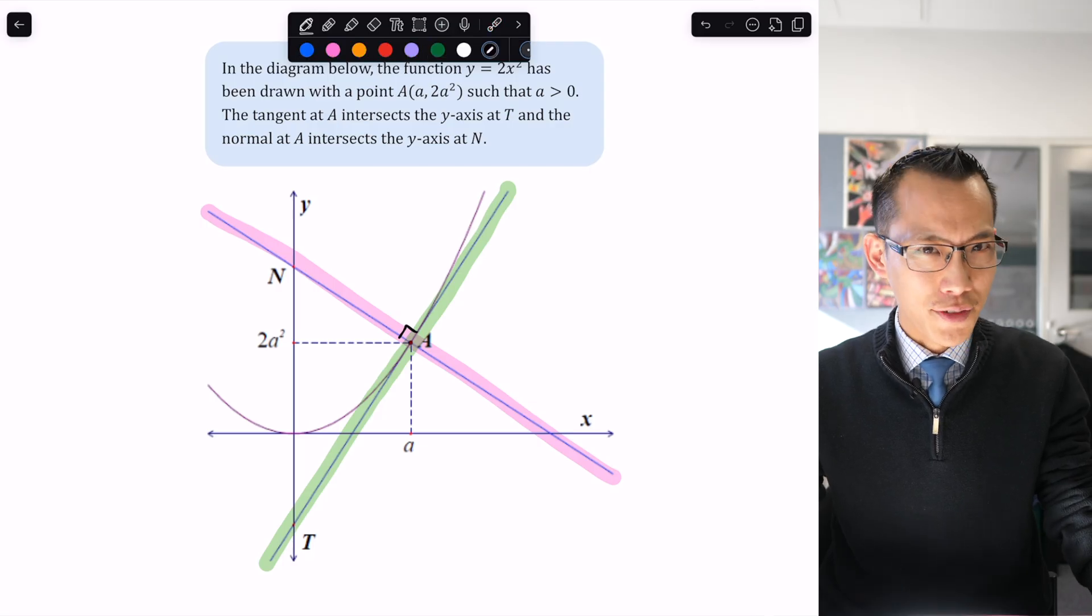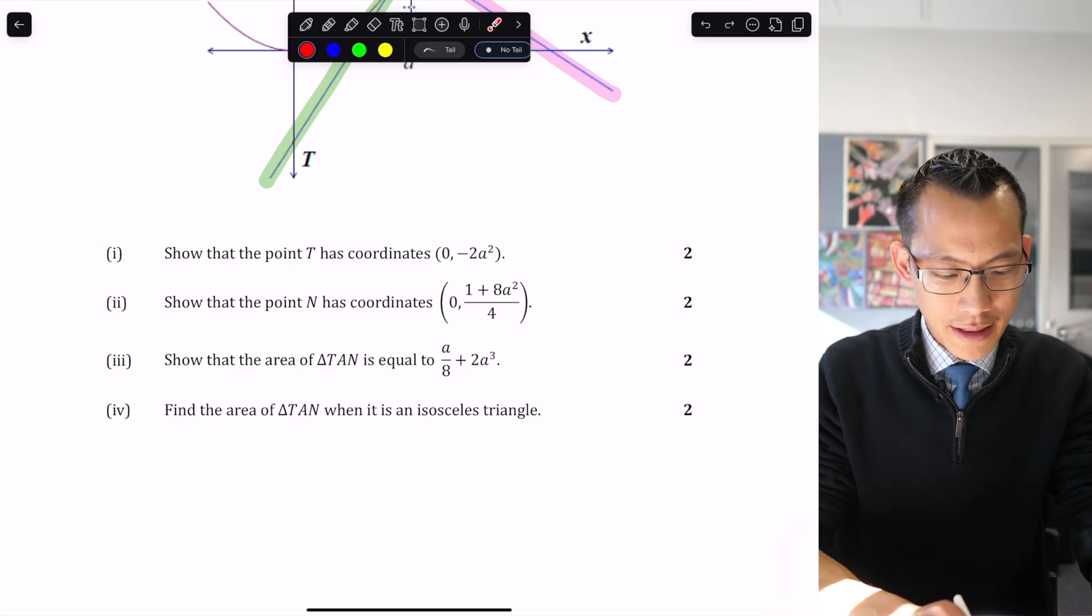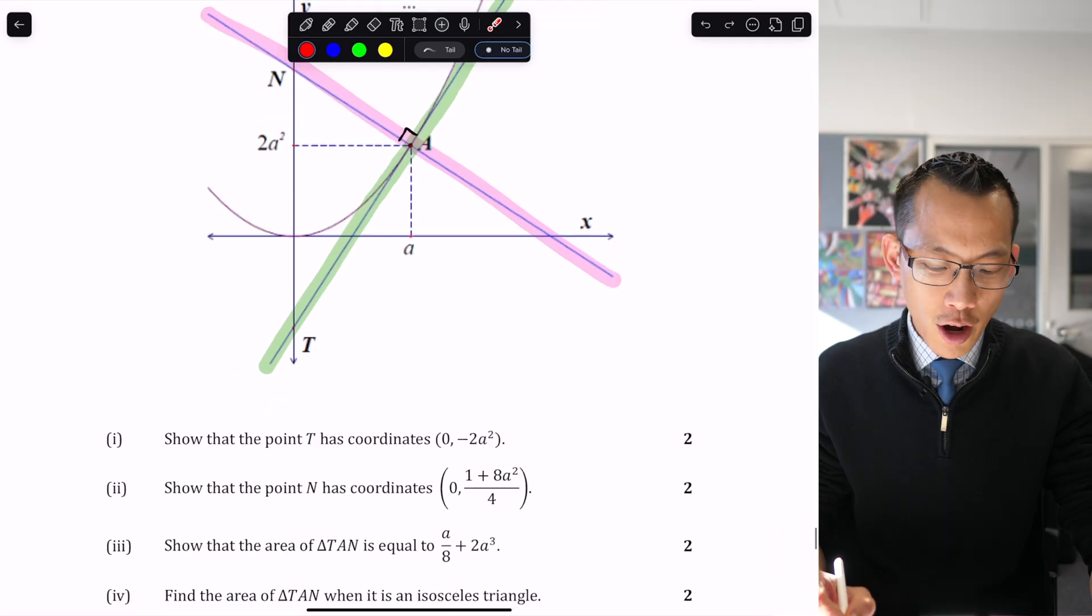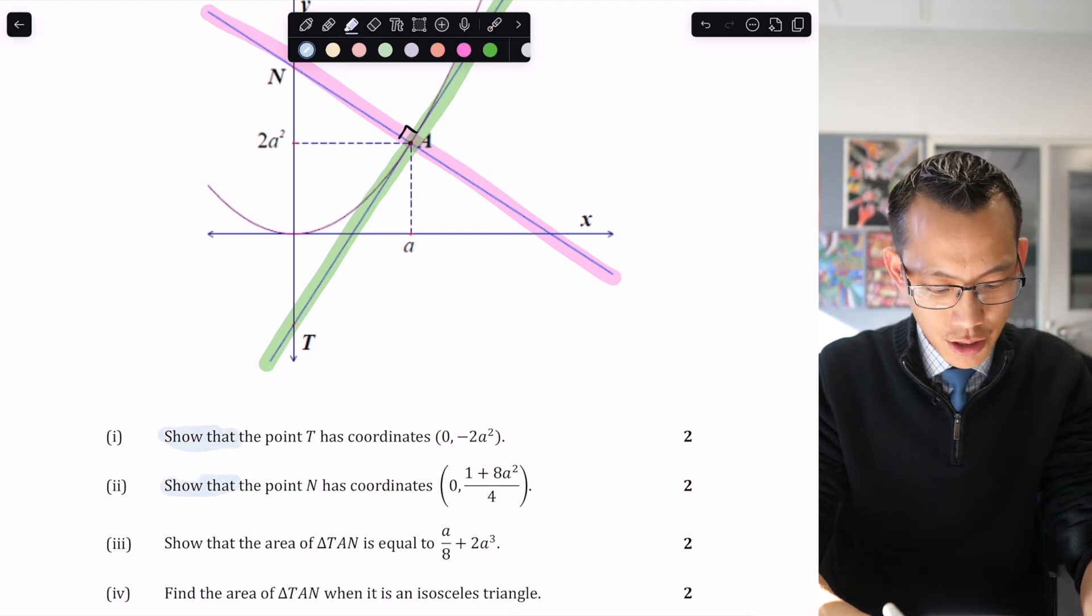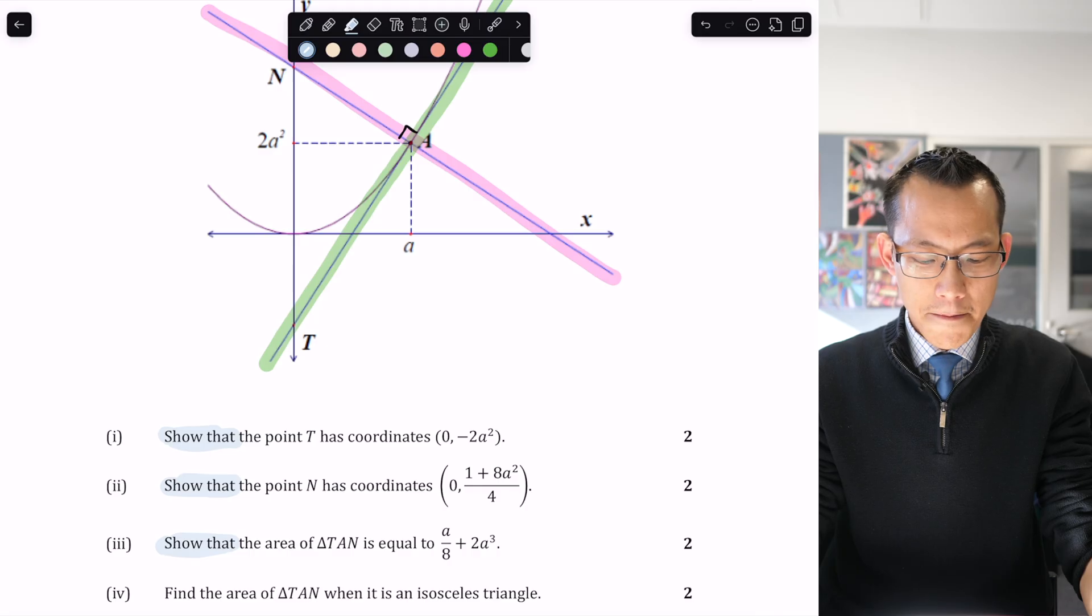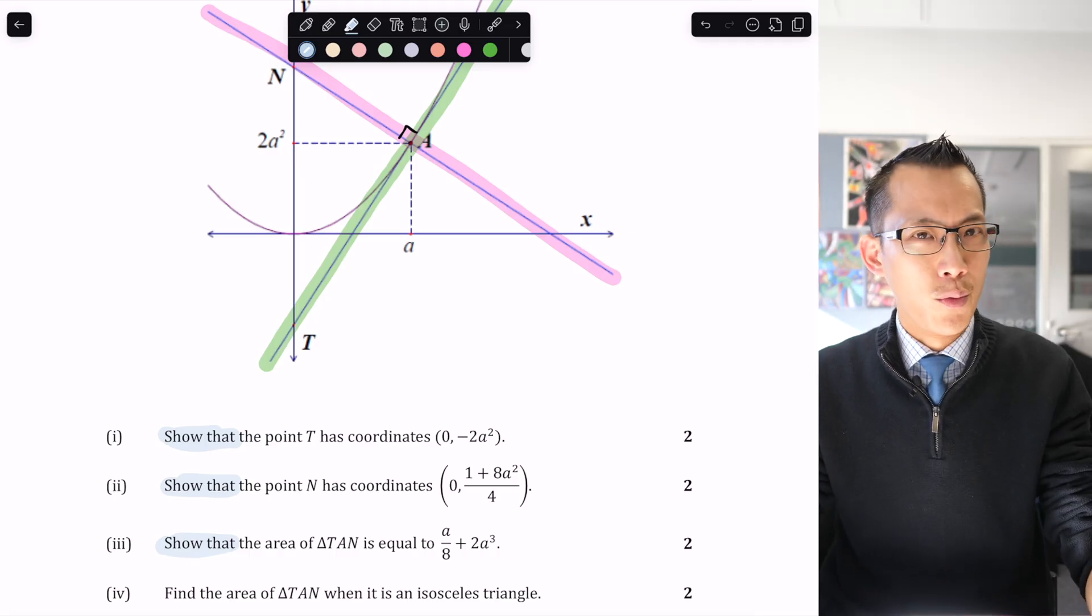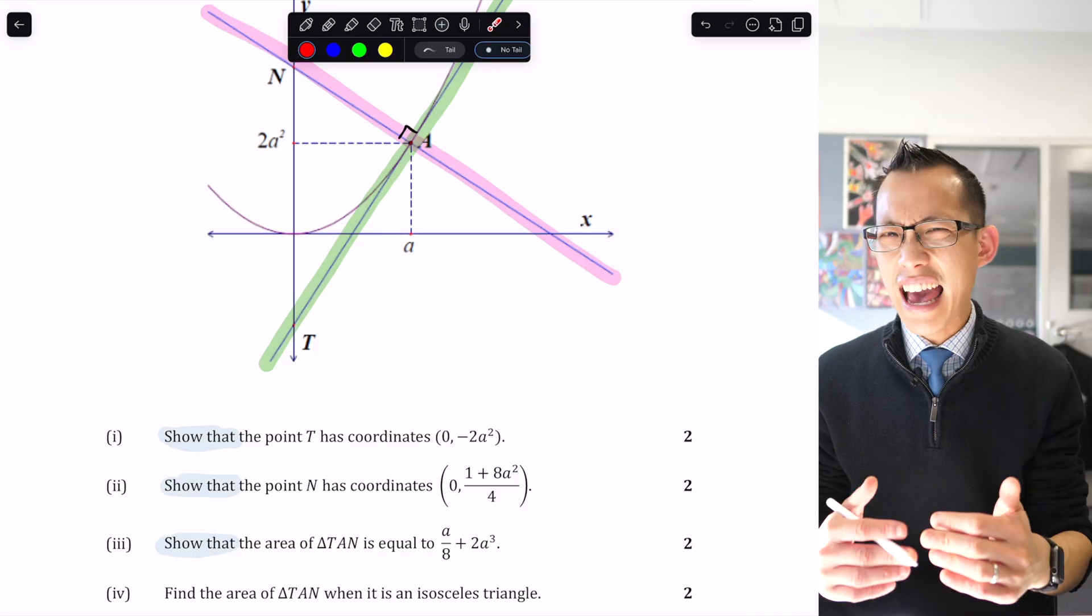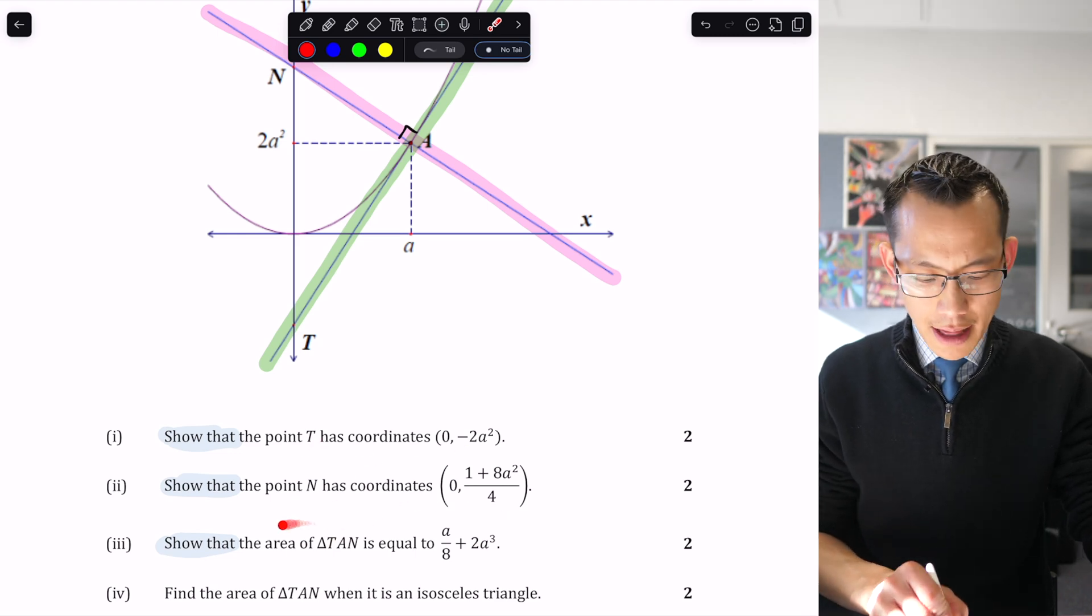Now we understand the situation. What are they asking? For parts one and two, they want us to find where T and N are. When a question says 'show that' and provides the answer, it indicates that finding the answer accurately isn't the only thing we care about - we care about how you get there.